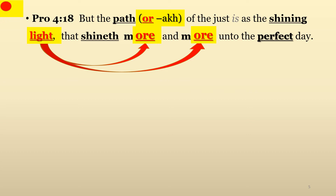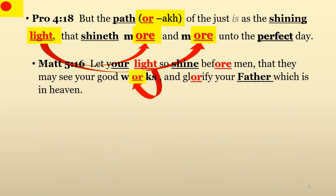When we walk in the orach of the Lord's word and keep His Torah, we will naturally produce the works of righteousness. In Matthew chapter 5, verse 16, Jesus — or Yeshua — who is the light of the world, commands us: 'Let your light so shine before men, that they may see your good works, and glorify your Father which is in heaven.'